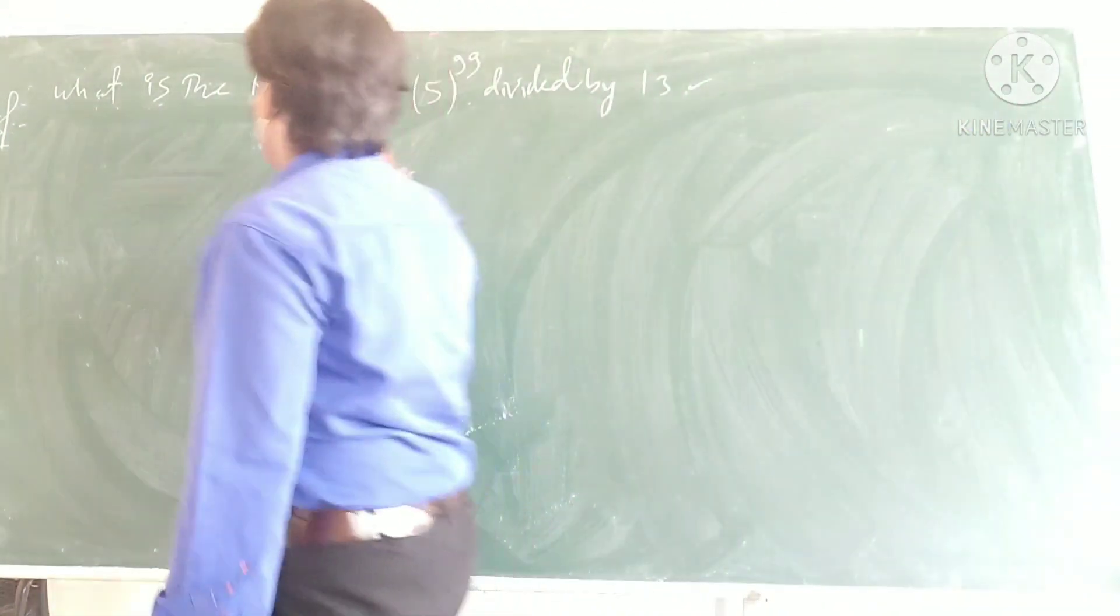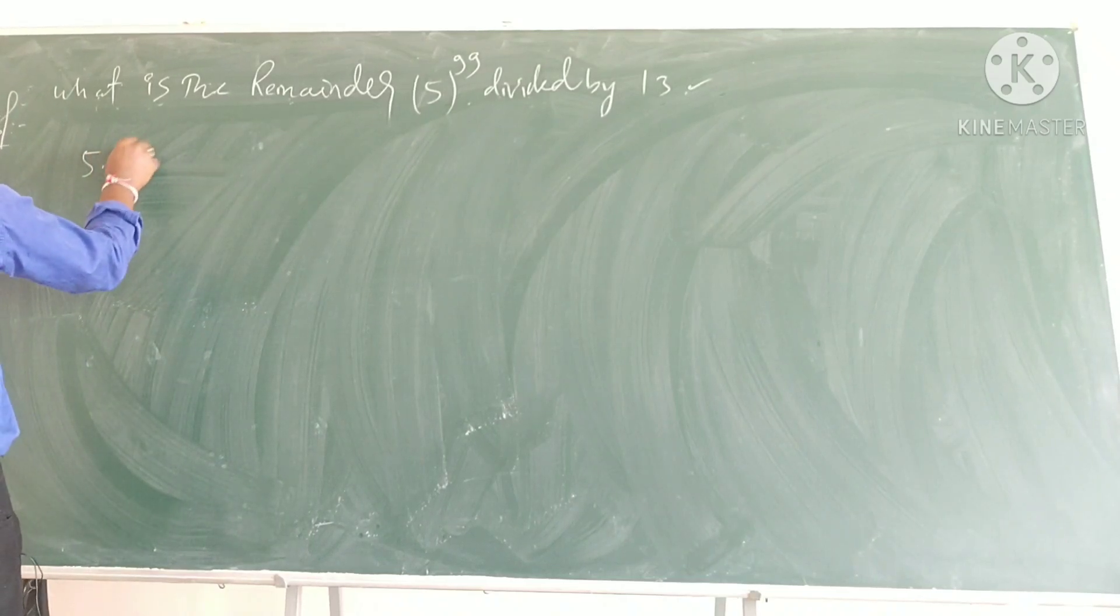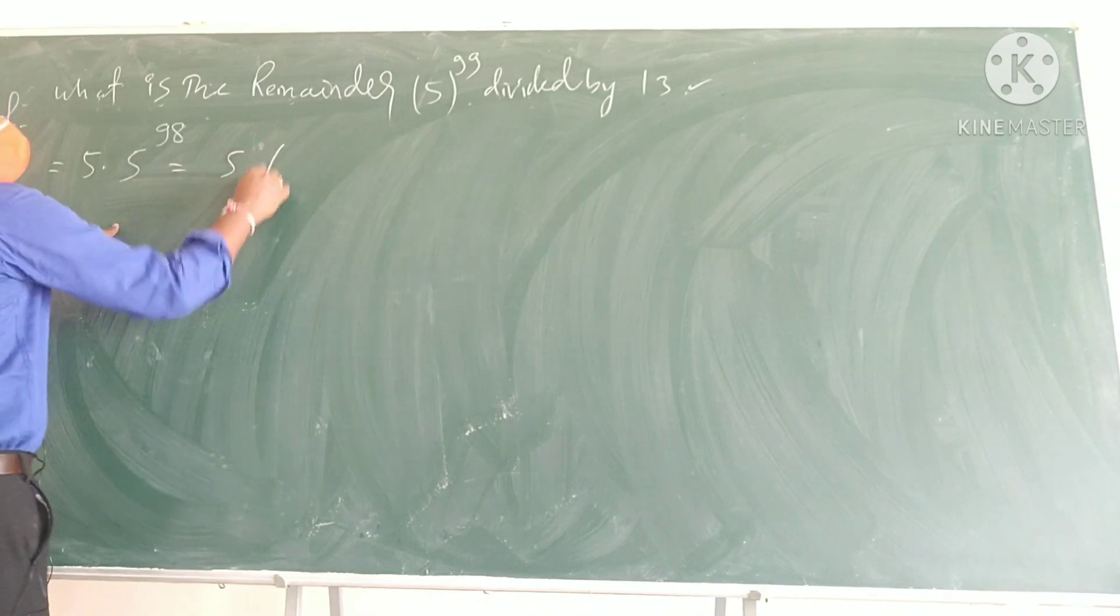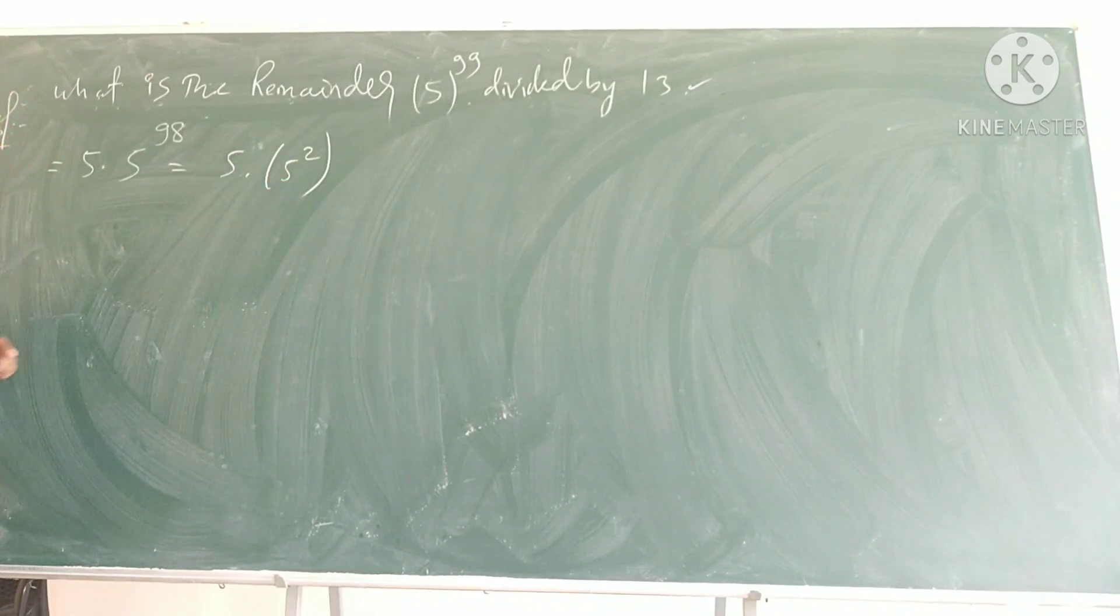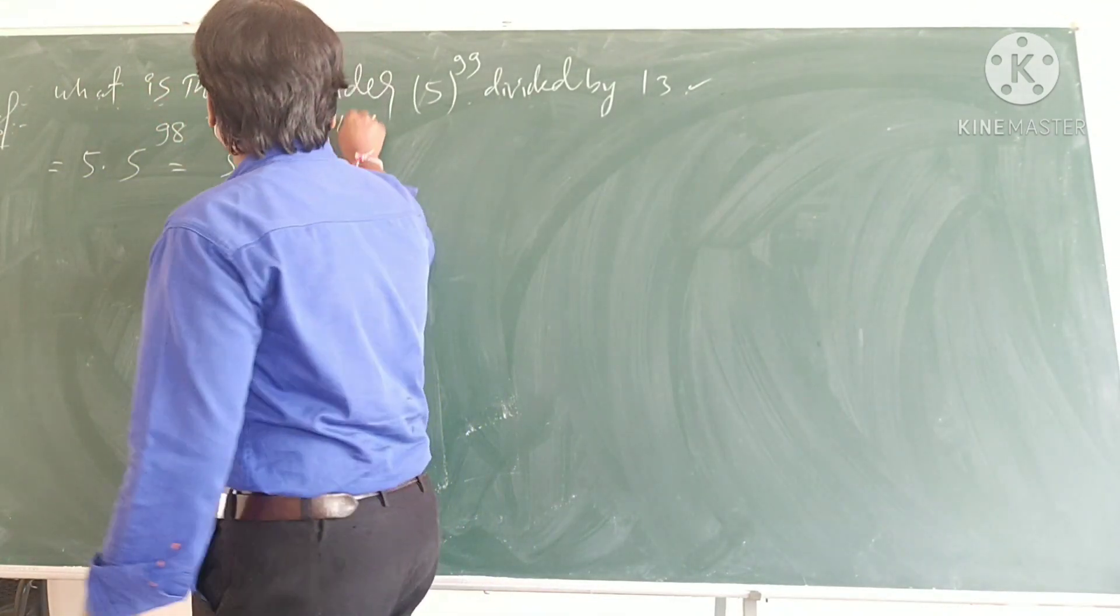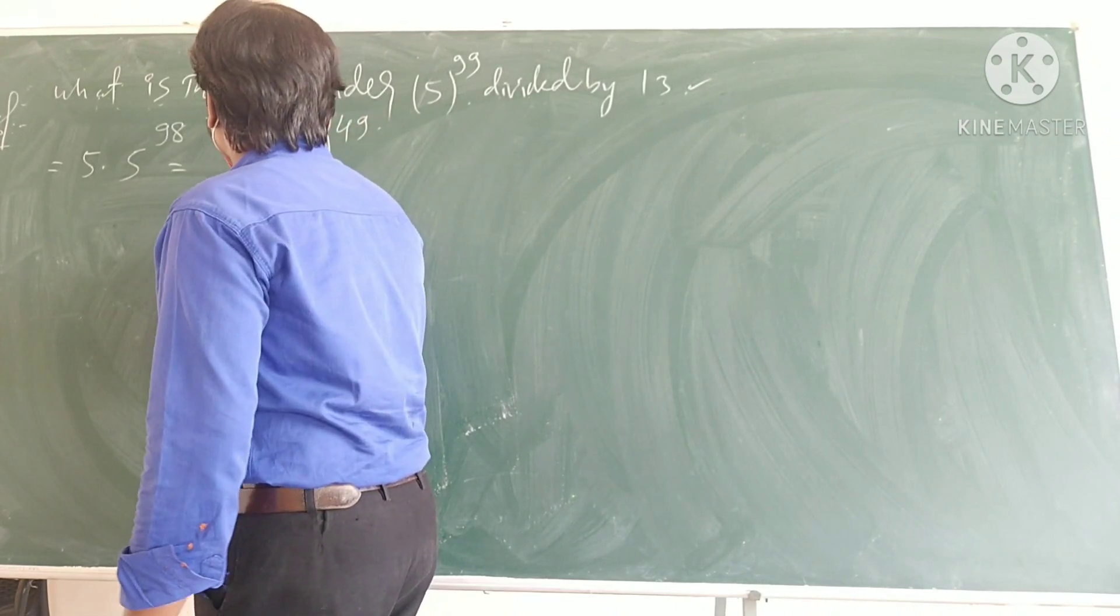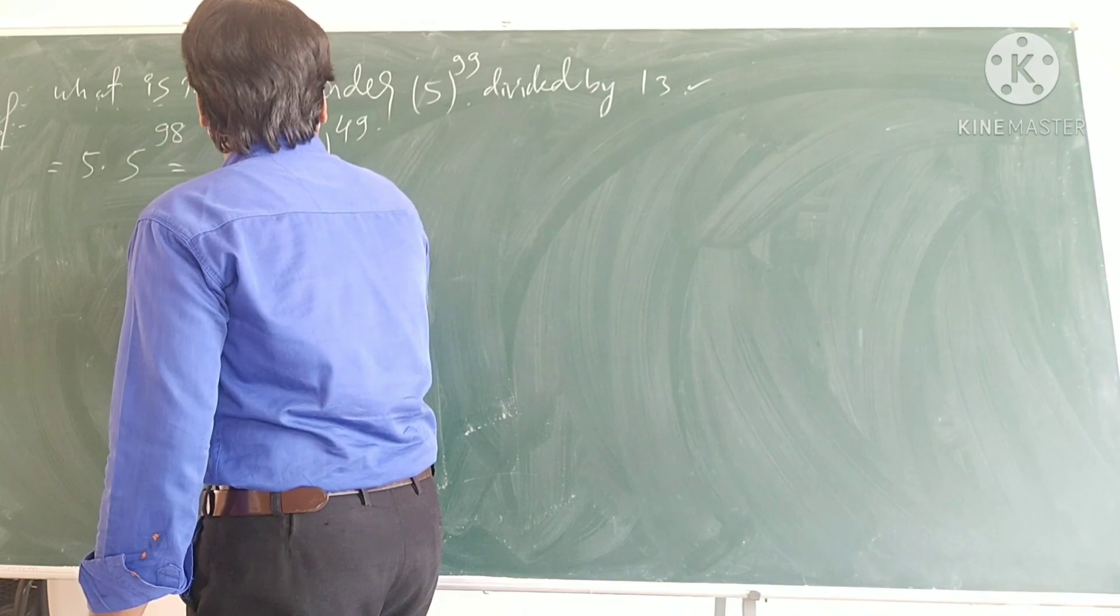So what I do here, this I will write as 5 into 5 power 98. Then this is, we can write as 5 into, this I will write as 5 square to the power of, 5 square to the power of, how much? 49, right, 49 I can write. Why I am doing like this? I got 25 to the power of 49.